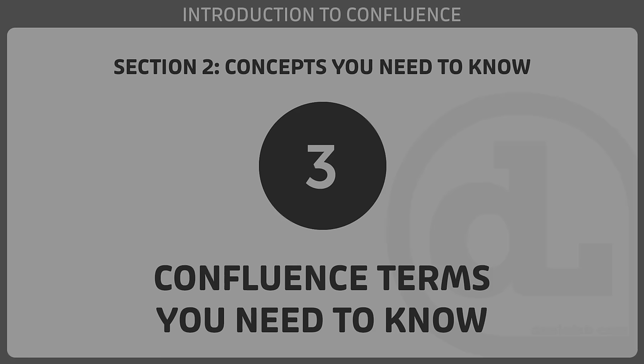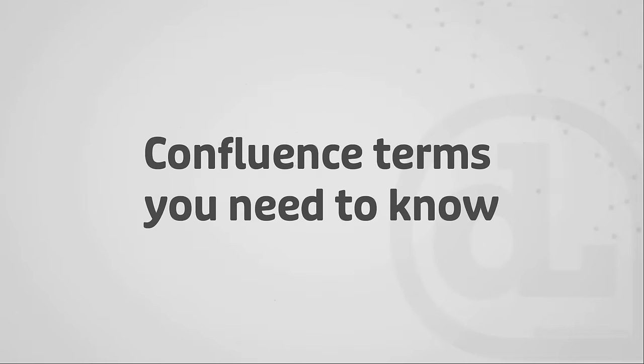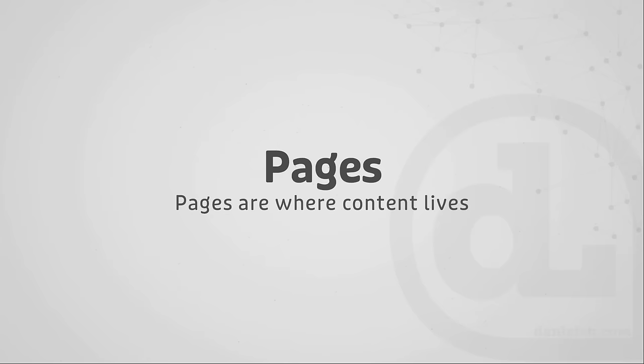Throughout this course, we'll be covering a lot of different features inside of Confluence. Before we dive into the interface, I wanted to take a couple minutes to cover a few terms that we'll see in Confluence. Let's kick this off with pages. Pages are important to understand because they are where all of our content inside of Confluence will live — things like text, images, tables, attachments, and macros all live on pages.